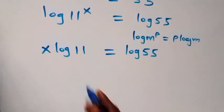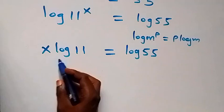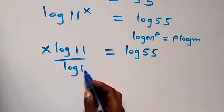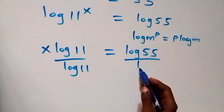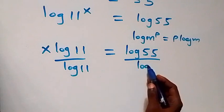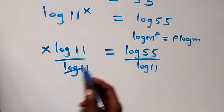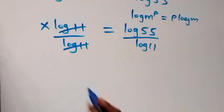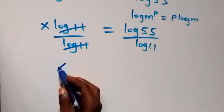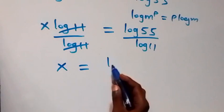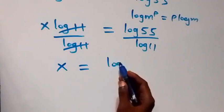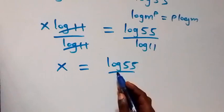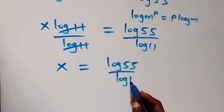Then we can divide both sides by log 11 — divide this side by log 11 and also divide this side by log 11. Here log 11 cancels out, then we have x equals to log 55 over log 11.